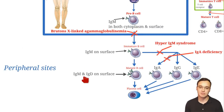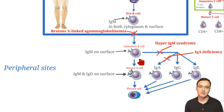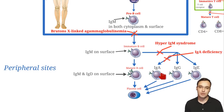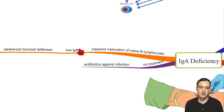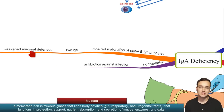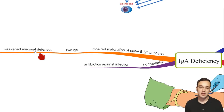These pre-B cells go out to peripheral sites like the blood, where they mature into immature B cells, then mature B cells, and then into plasma cells. The problem in IgA deficiency is that this step between immature B cell and mature B cell is blocked. The IgA production is blocked, while other immunoglobulins like IgG and IgM remain at normal amounts. With a low amount of IgA, we have a weakened mucosal defense.